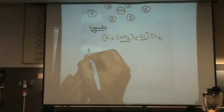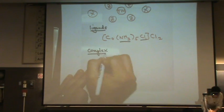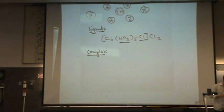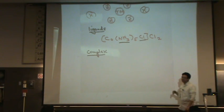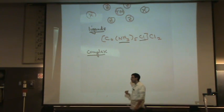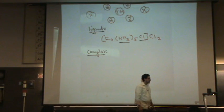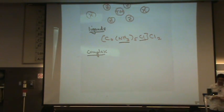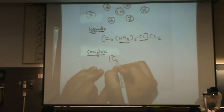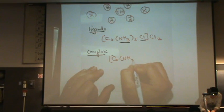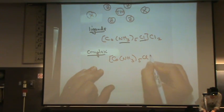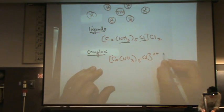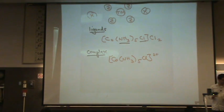Next term: a complex. This is essentially another way to say a complex ion — a transition metal surrounded by ligands. Sometimes we just call it a complex.